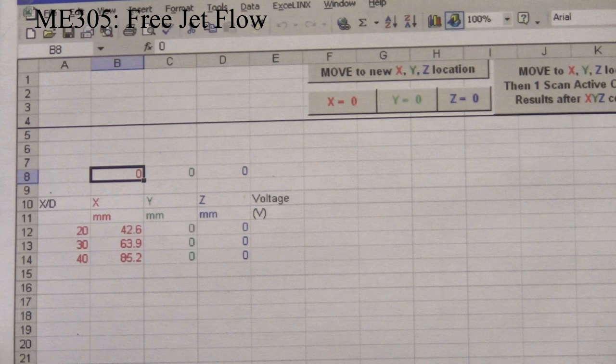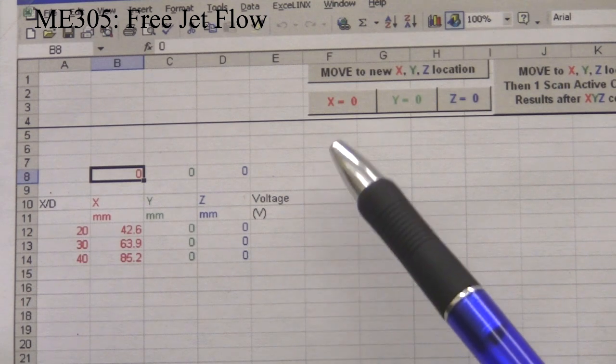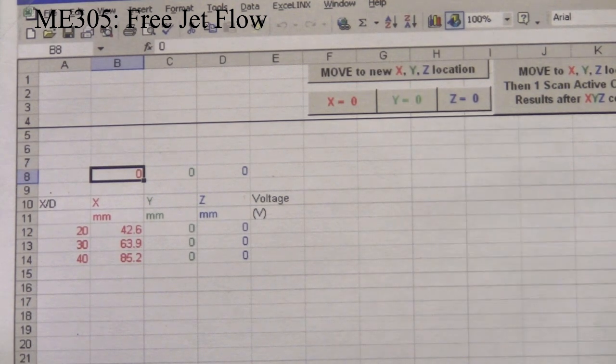Now note at the top of the spreadsheet that the positions x equals zero, y equals zero, and z equals zero appear on buttons. These tabs keep track of your current location.